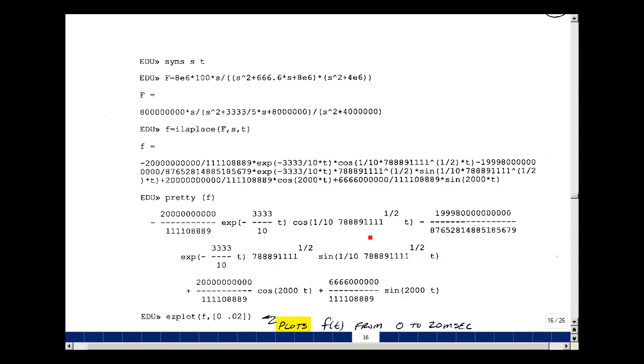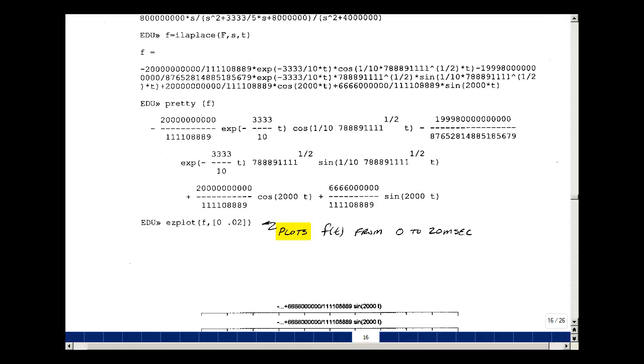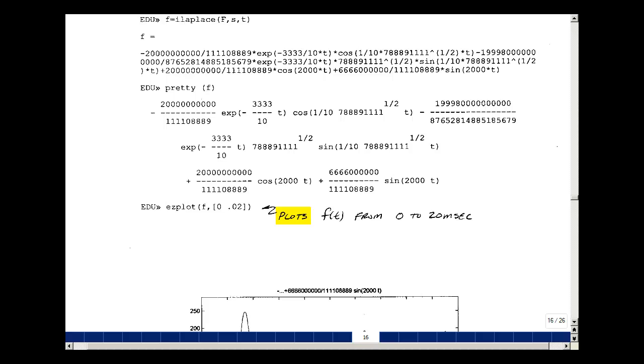We call this function F, a function of S, and we want the result as a function of T, F of T. Here's our result, but it looks difficult to read. Let's use the pretty command to get this more readable. We've got this term times e to the minus 3,333 over 10 times T times the cosine of 1 tenth square root of this expression.